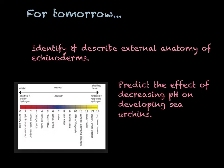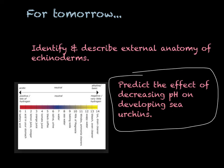For tomorrow, make sure you have these notes, because you're going to do a quick observation lab in which you identify and describe the external anatomy of sea stars — the little ones in my fish tank. Then the big lab you're going to do is predict the effect of decreasing pH, which means increasing acidity, on developing sea urchins. Since their shells are made out of calcium carbonate, how is that decreasing pH going to affect them? It's more of a discussion.